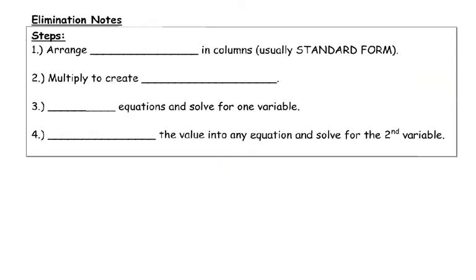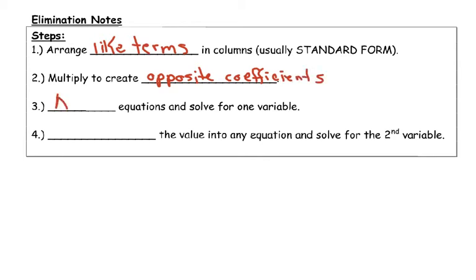Now we're going to go over elimination. Here are the steps: Step 1 — arrange like terms in columns, usually in standard form (x-term + y-term = number). Step 2 — multiply to create opposite coefficients. Step 3 — add the equations and solve for one variable. Step 4 — substitute that value into any equation and solve for the second variable. Go ahead and pause to copy your notes, then we'll move on to the example.